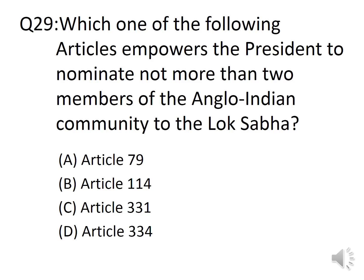Question 29: Which one of the following articles empowers the President to nominate not more than two members of the Anglo-Indian community to the Lok Sabha? Options: A. Article 79, B. Article 114, C. Article 331, D. Article 334. The correct answer is Option C, Article 331. Article 331 says the President can nominate not more than two members of the Anglo-Indian community to the Lok Sabha. Anglo-Indian means an English person who lives or lived in India for a long time.